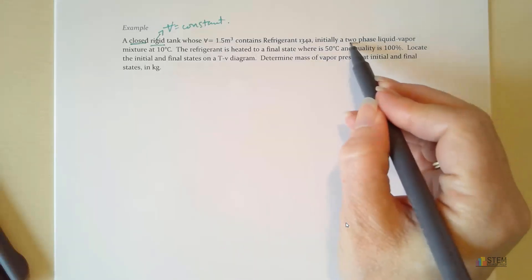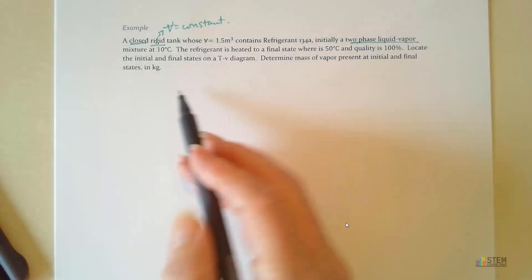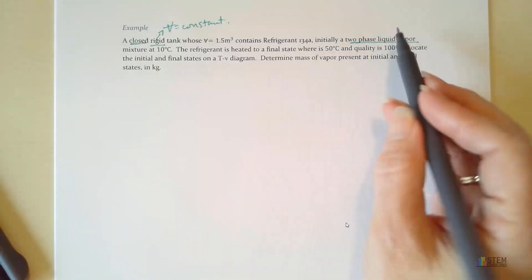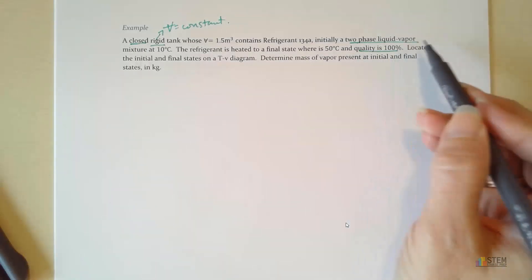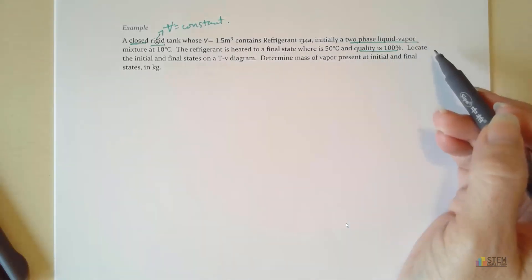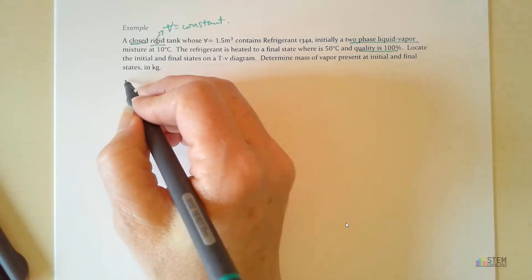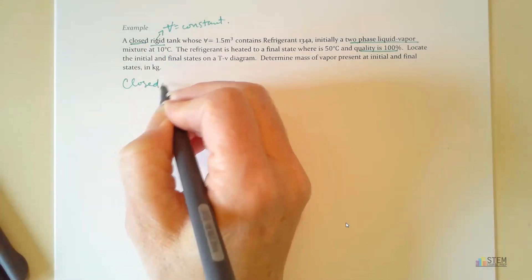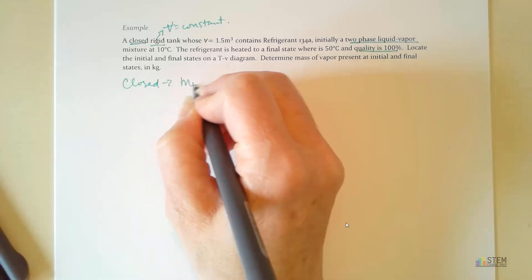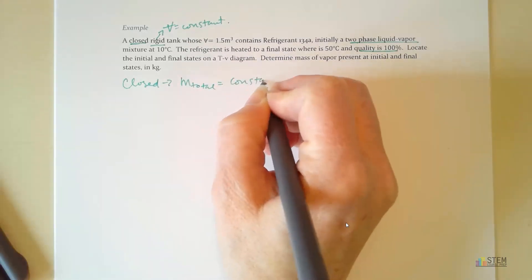Notice it tells us we've got a two-phase liquid vapor mixture, and then we go to a quality of 100%. Those are the main things we've got. And again, since it's closed, this means our mass doesn't change. So our total mass is going to be constant.